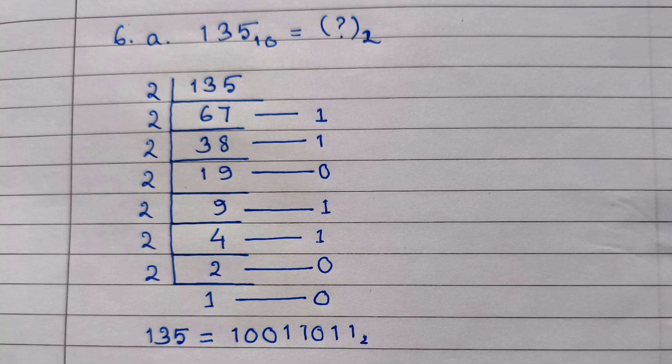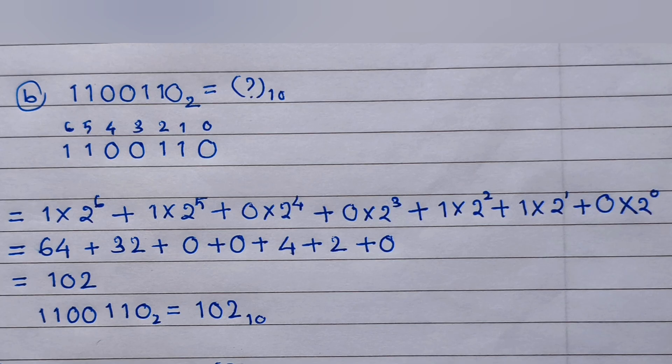When we write the answer, since we are converting the number into binary, we write the base as 2. To convert a binary number into decimal, we first write the index of all digits from the right hand side starting from 0: 0, 1, 2, 3, 4, 5, 6. After that we multiply each digit by 2 to the power of its index. For example, the first number will be 1 into 2 power 6, which equals 64. Whenever we multiply by 0 the answer is directly 0. So 64 plus 32 plus 4 plus 2 gives us 102. The base will be written as 10 since we are converting into decimal.